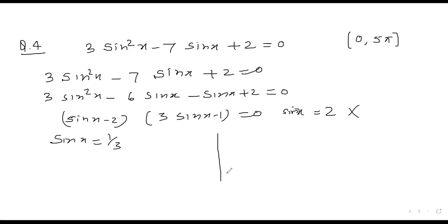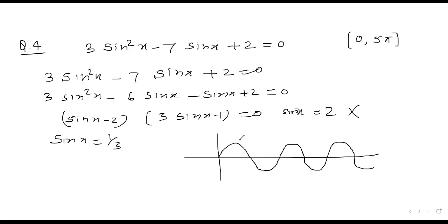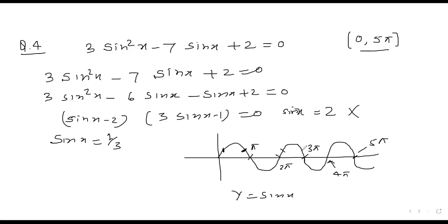Plotting the y = sin x curve over [0, 5π], we check where sin x = 1/3. The horizontal line at y = 1/3 intersects the sine curve at six points in this interval, so there are six solutions.